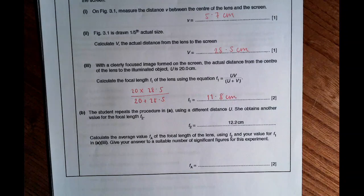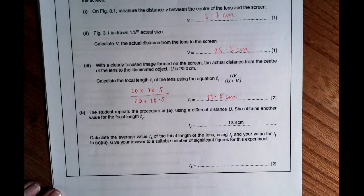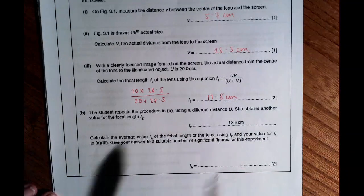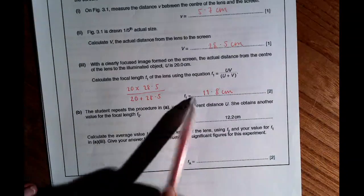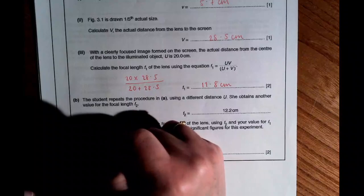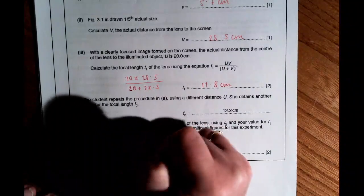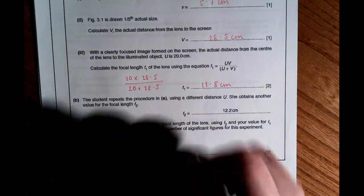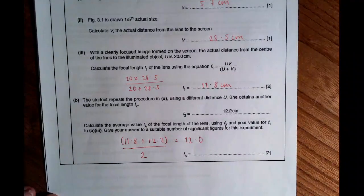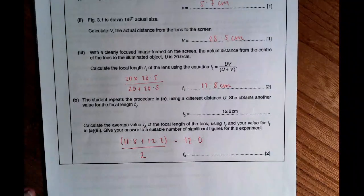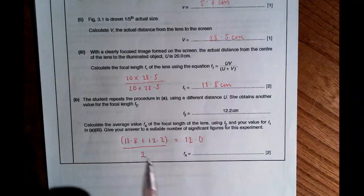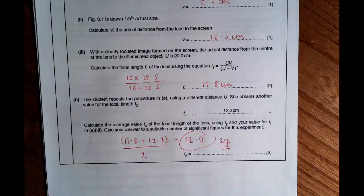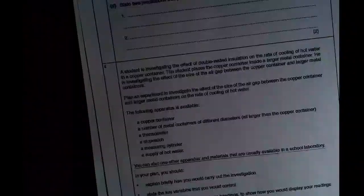Calculate the average value F_A of the focal length of the lens using F2 and using your value for F1. We're just going to literally find an average of these two numbers. We've got 11.8 plus 12.2 over 2, and I'm going to get 12.0 to a suitable number of significant figures. There needs to be 3 because these are both to 3 significant figures.